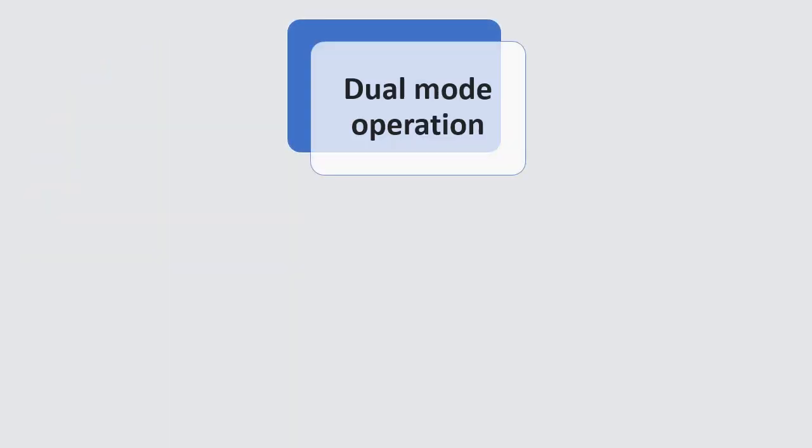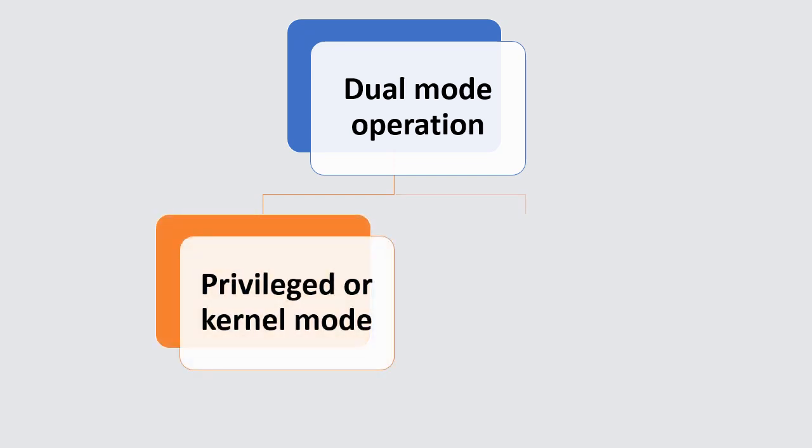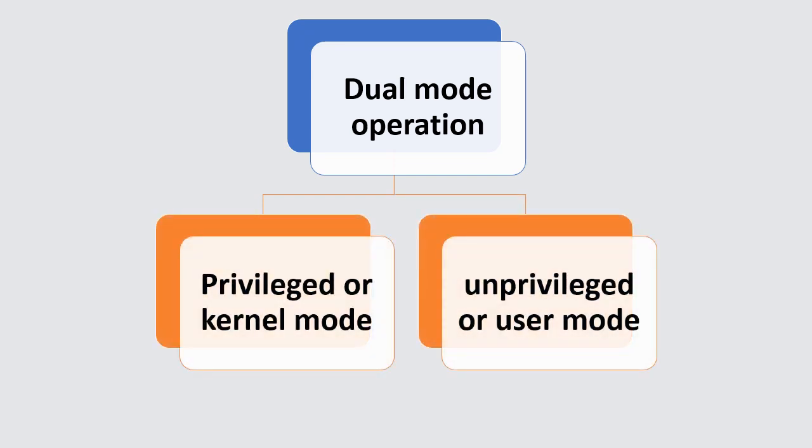Dual mode operation means the processor can operate in one of at least two modes: privileged, or kernel, mode, and unprivileged, or user, mode.